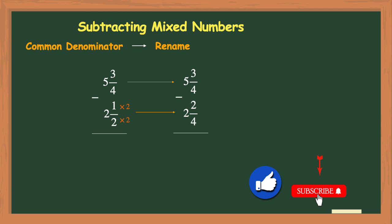Now that our fractions have the same denominator of 4, we can subtract. To do this we just subtract the numerators and keep the denominator of 4 the same. So 3 minus 2 is 1 and we'll keep the denominator of 4 so our fraction is 1 fourth.